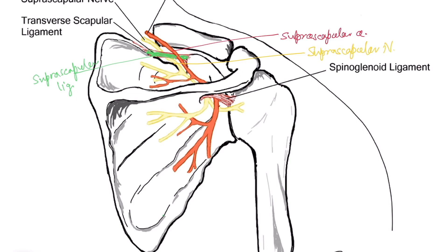That is how both the nerves and vessels reach into the supraspinous fossa to innervate the muscle there. Then both the nerves and vessels will cross the spinoglenoid ligament — they will pass below this spinoglenoid ligament to reach the infraspinous fossa and innervate the muscle there.